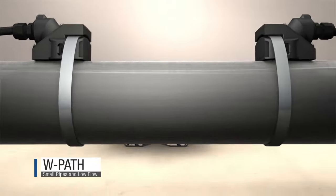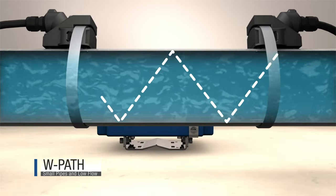A W path or 4 traverse is ideal for smaller sized pipes and low flow measurement.